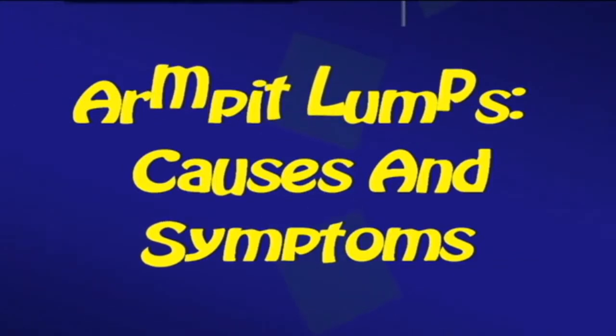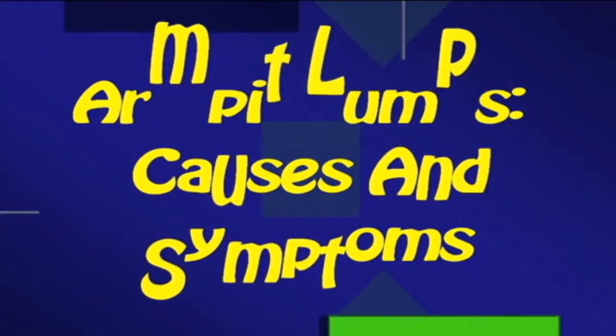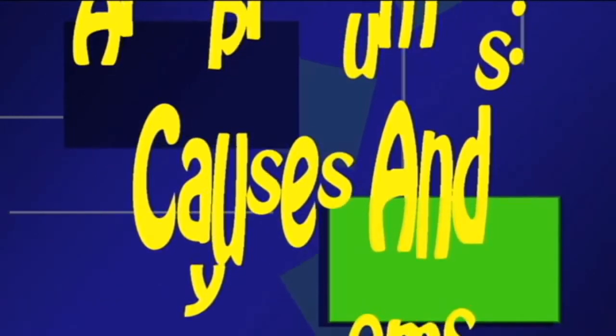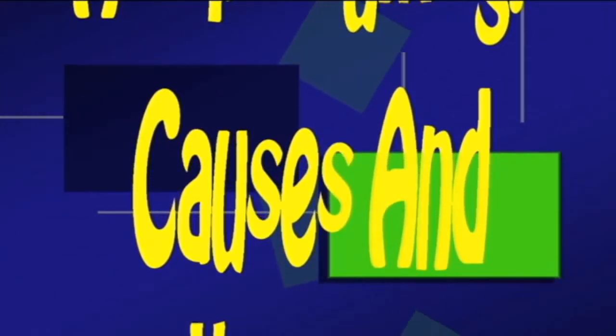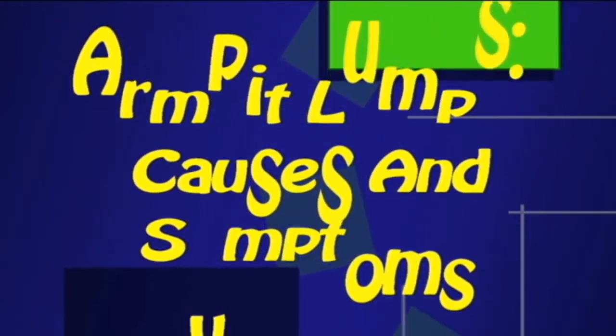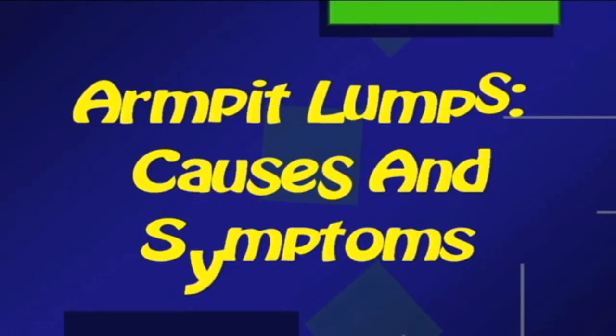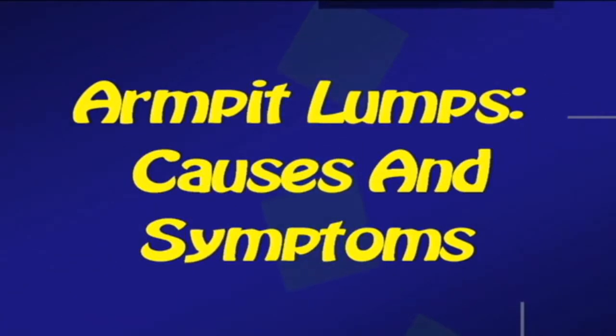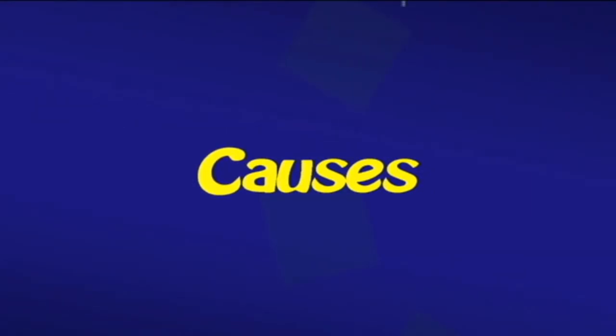Armpit lumps: causes and symptoms. Armpit lumps are very common and are normally caused by a swollen lymph node or gland under the armpit. However, there are many other causes for armpit lumps, some of which may require treatment. There are many treatments for lumps that appear under the arm, and depending on what has caused them, a doctor can diagnose the underlying cause and prescribe the proper treatment.